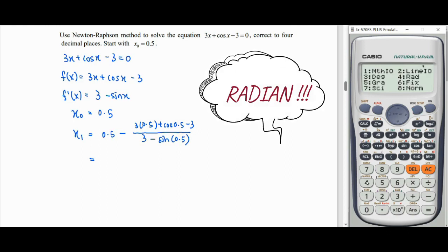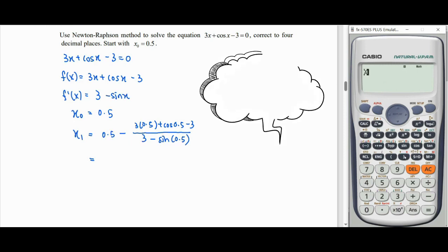Then only we start key in the formula of Newton-Raphson method x minus the function up here will be 3 alpha x plus cos alpha x minus 3. And denominator will be 3 minus sin alpha x. Then we press calculate,